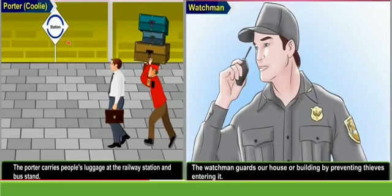Now see — our Porter, or Coolie. If you are going to any station and you have many bags, alone you cannot hold them all. But a Coolie carries people's luggage at the railway station and bus stand. So in this picture you can see the Porter or Coolie carrying people's luggage at the railway station and bus stand.